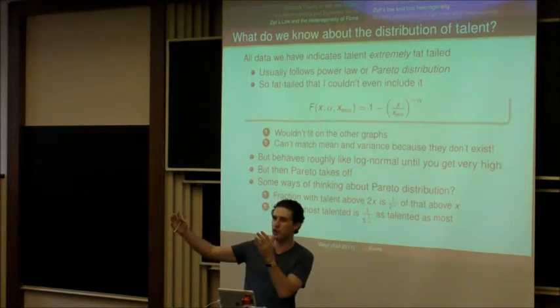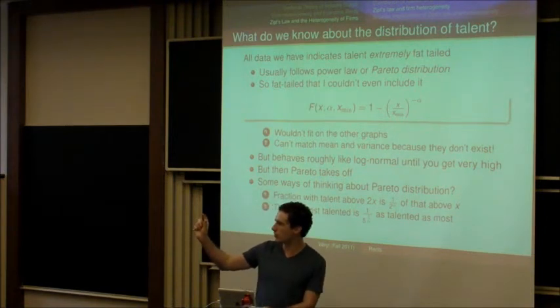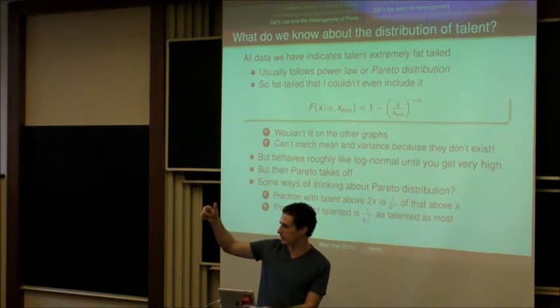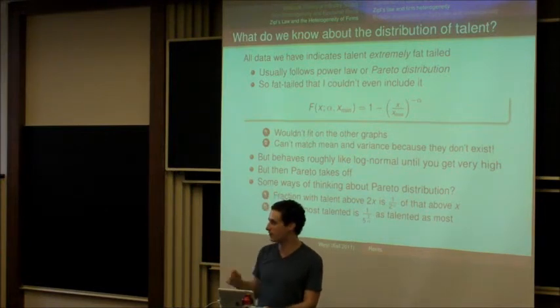The further to the top you get, the bigger the differences are, because the third and fourth person are only one over three over one over four compared to one another. So the fourth person is three-fourths as good as the third person, but the second person is only one half as good as the first person.